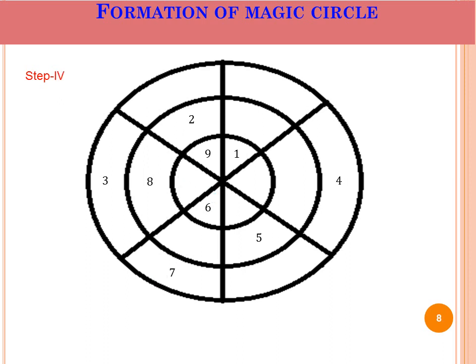Here we can cross diagonally, so here we put 10. Then adjacent circular row, move left — here you put 11. And further adjacent, here you put 12.